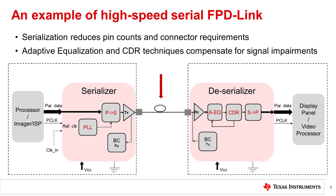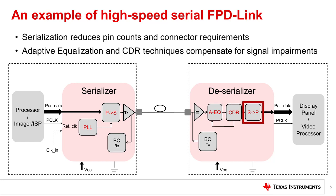Along the way, the high-speed serial signal is going to be subject to impairments such as jitter, crosstalk, reflections, attenuation, and dispersion. In order to recover the serial signal from these impairments, an FPD-Link deserializer includes an adaptive equalizer and a clock and data recovery block to recover data and extract the clock used to re-time the data. Finally, the high-speed data is fed into a serial-to-parallel converter to replicate the parallel data that was sent as an input to the serializer.